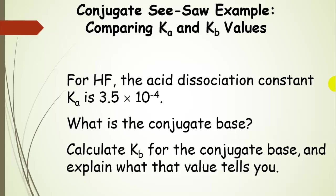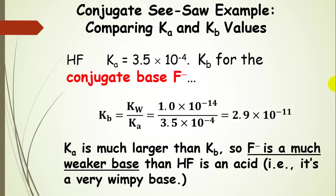Let's look at hydrofluoric acid again. Ka is 3.5 × 10⁻⁴. The conjugate base is fluoride anion. Calculating Kb for fluoride: we take Kw and divide by Ka, giving us 2.9 × 10⁻¹¹. That is much smaller than the Ka value, which means fluoride anion is a very wimpy base.